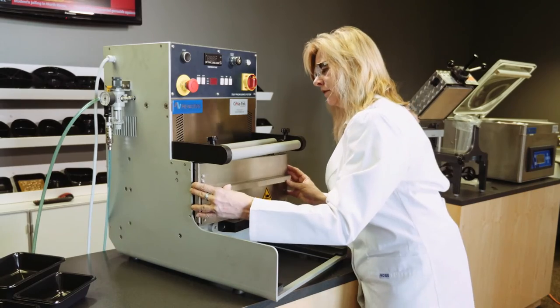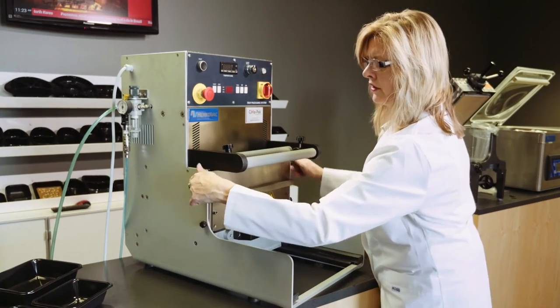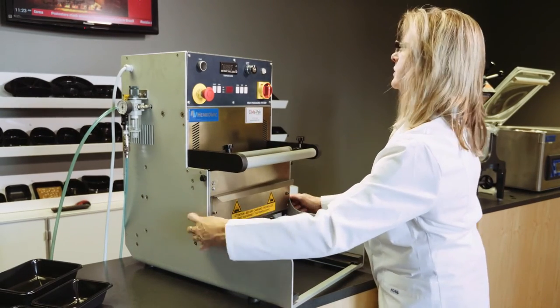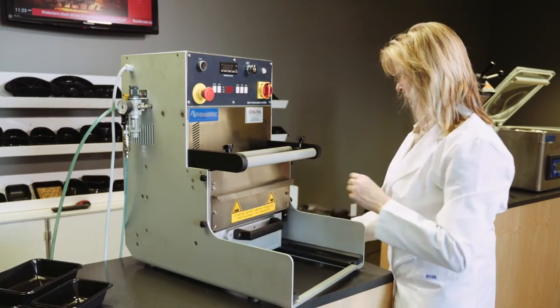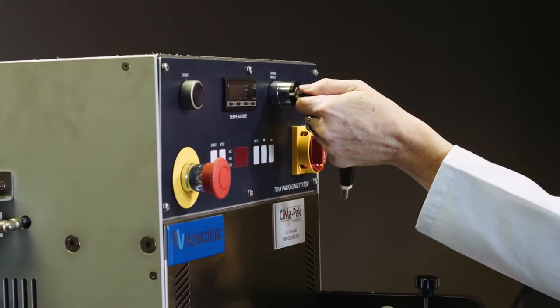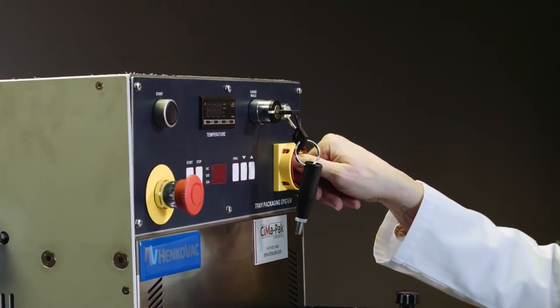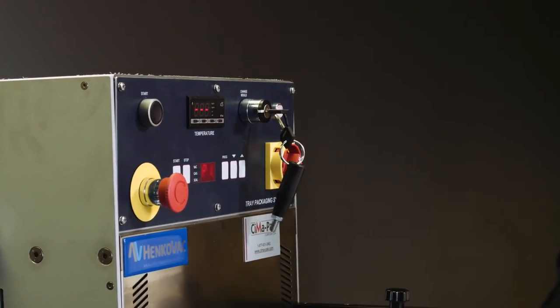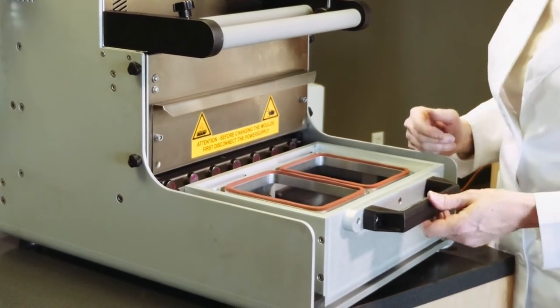The key will have to go back in for the safety. Once everything is back in place, the final thing that is quite important is that we're going to put the key back into the change mold position, turn it away from change mold, and turn on the power. You can hear that it lifts and you can pull out the drawer. You're ready to start packaging.